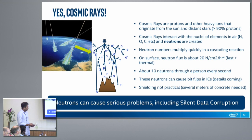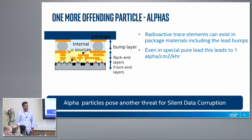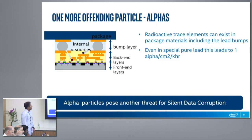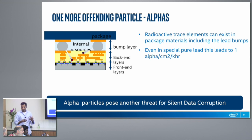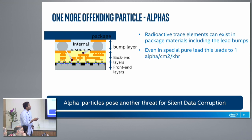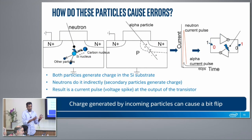There's yet another particle to worry about when we talk about soft errors, and that is the alpha particle — essentially a helium nucleus: two neutrons and two protons as one particle. These are generally generated within the package itself of the integrated circuit, usually from the lead solder bumps. These are essentially radioactive impurities that exist in the lead. Even if we manage to get very pure lead — say, one part per billion pure lead — we still get about an alpha particle per centimeter squared per thousand hours.